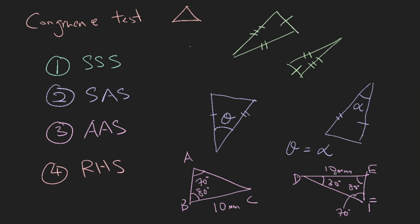Finally, RHS is a special case for right-angle triangles. As long as you have two right-angle triangles where the hypotenuse is the same length and one other side is also the same length, you can say that the two triangles are congruent.